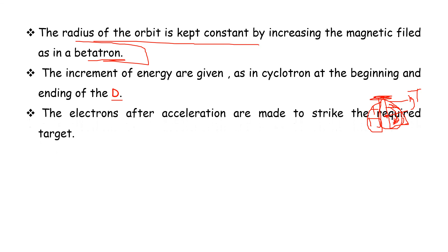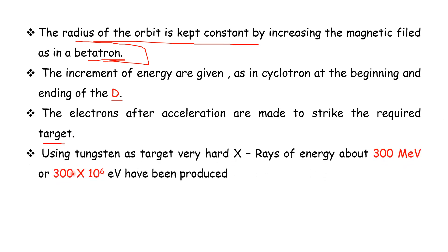The electrons are made to strike the target. After the acceleration, the electrons reach the target. Using tungsten as a target, very hard x-rays of high energy are produced.